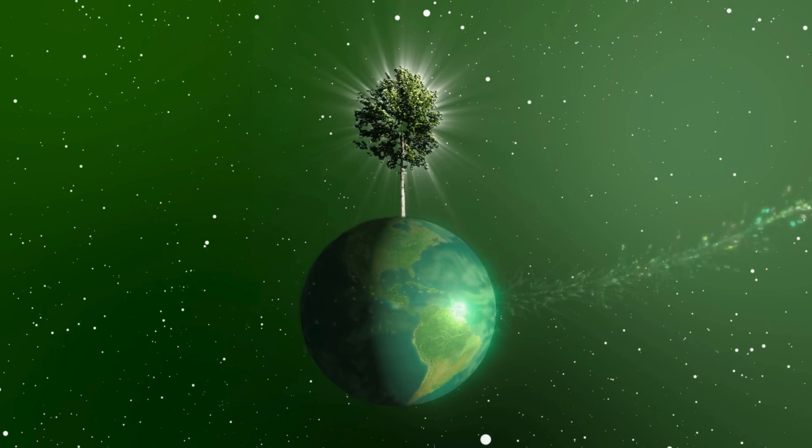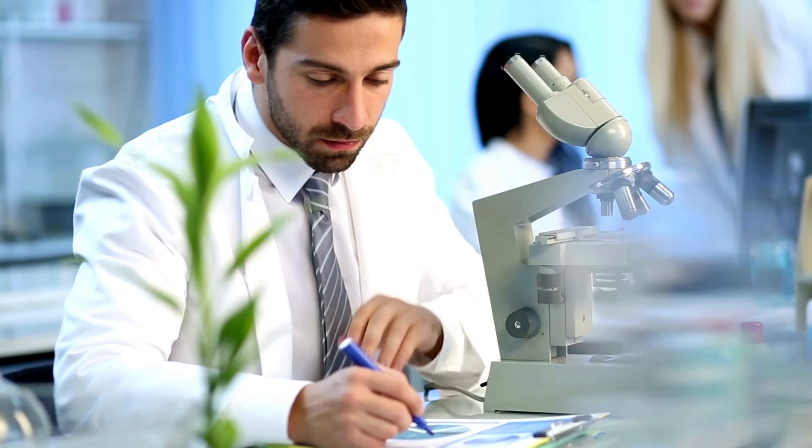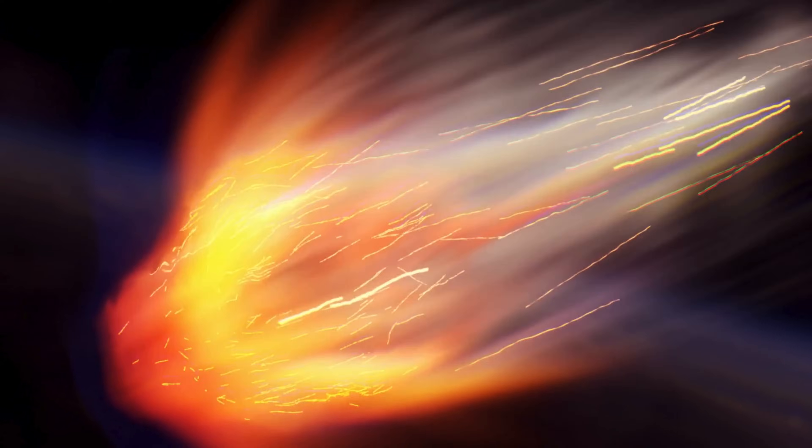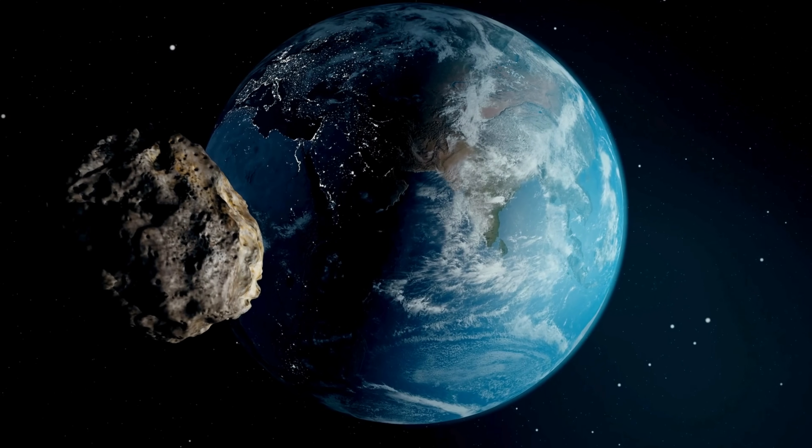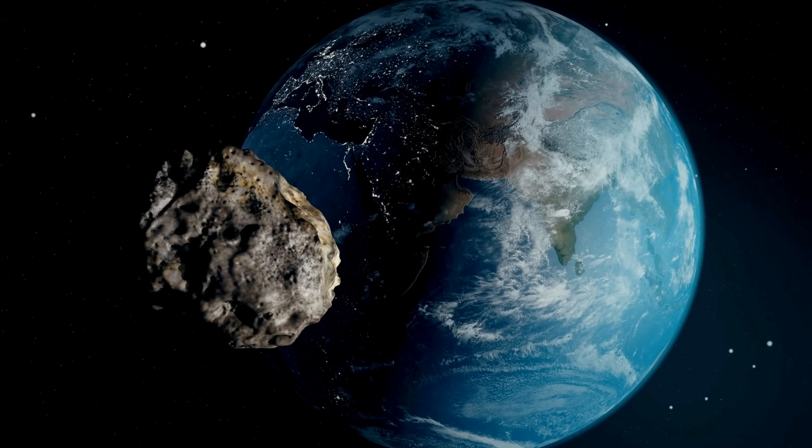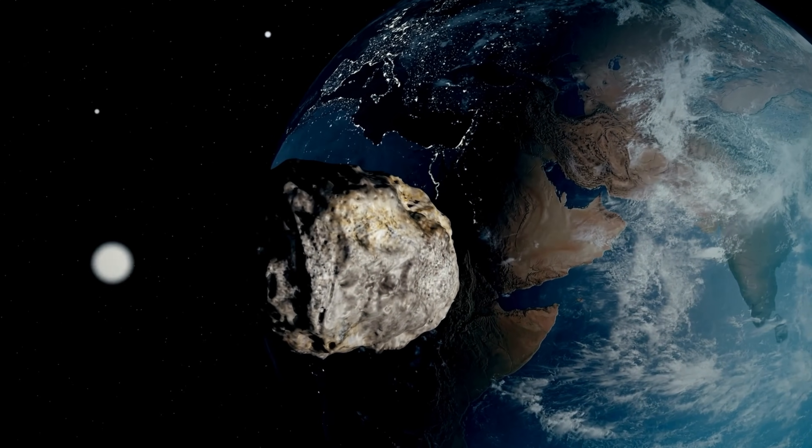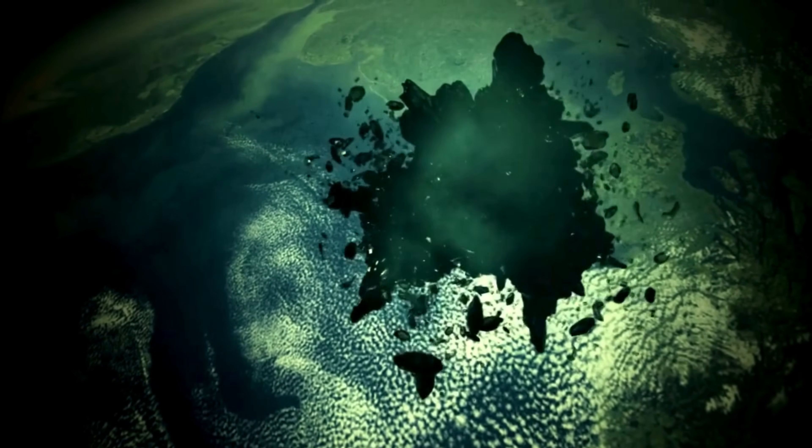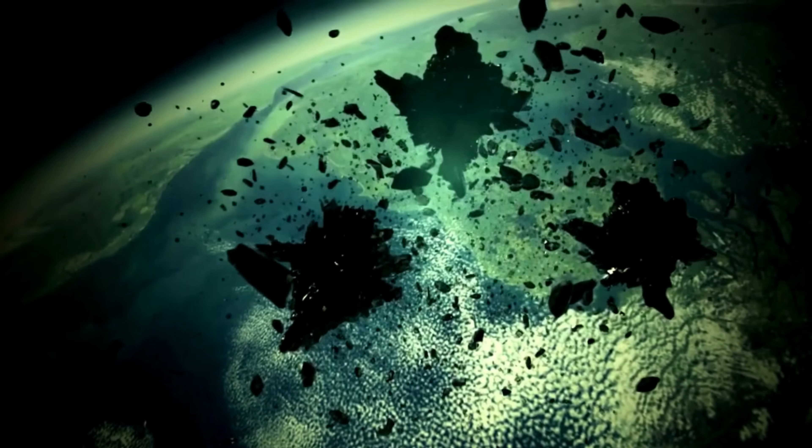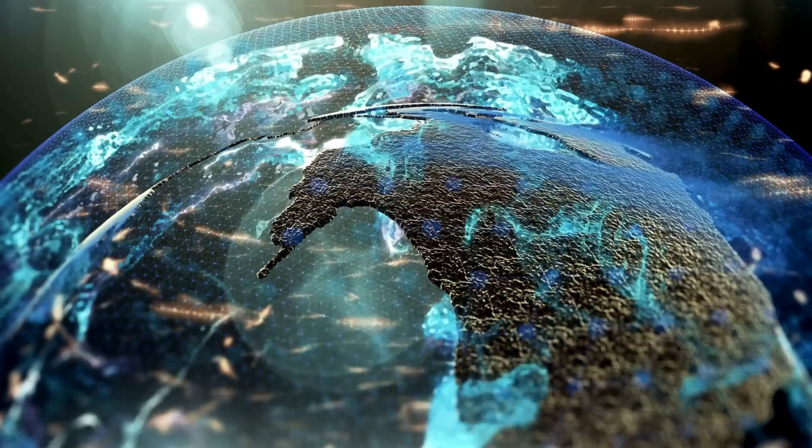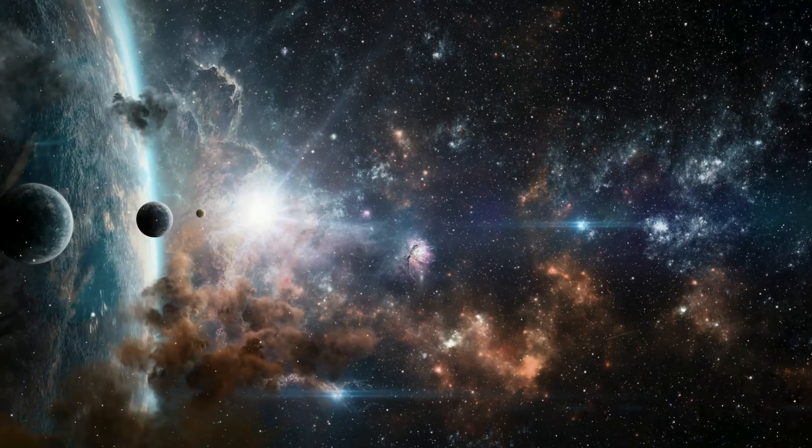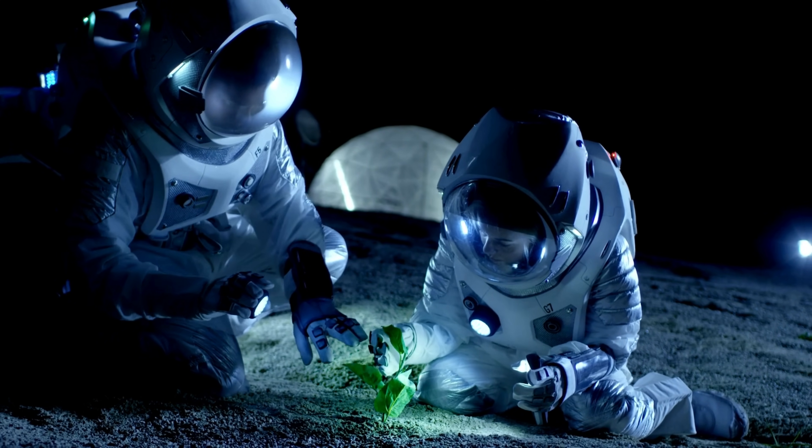In recent years, scientists have discovered organic compounds, including amino acids, on meteorites that have landed on Earth. This discovery raises an intriguing possibility: Could these meteorites have seeded Earth with essential ingredients for life? Imagine a meteorite carrying amino acids or other organic compounds crashing into early Earth, depositing these molecules into the primordial soup or even into hydrothermal vents. This cosmic delivery might have jump-started the process of life on our planet. While panspermia doesn't explain how life originated in the first place, it does suggest that Earth's first life forms might have had help from space. It also raises exciting questions about the potential for life elsewhere in the universe.